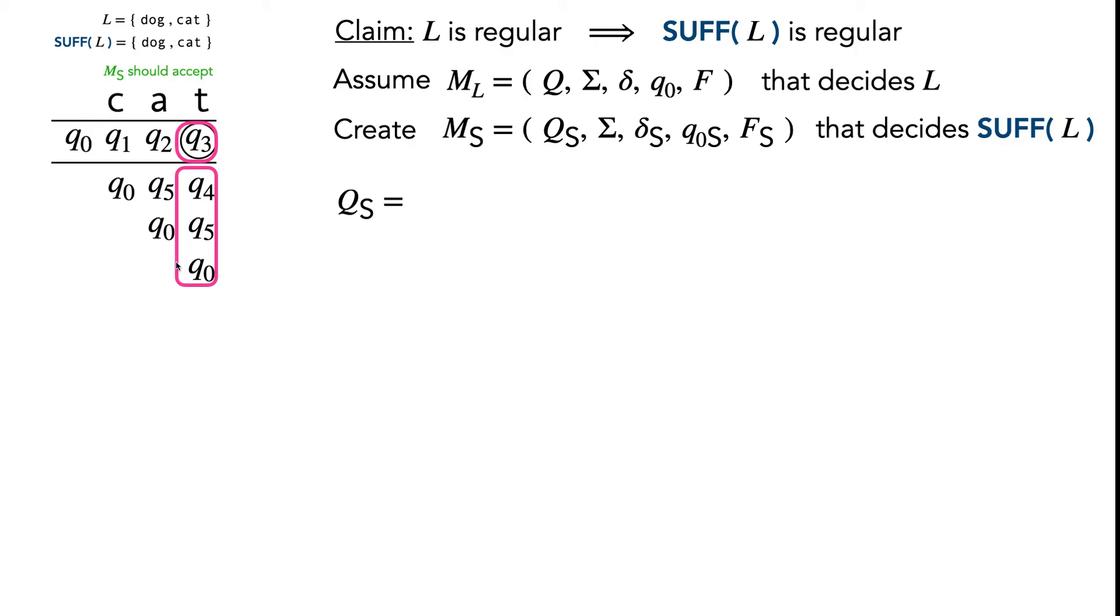In notation, that means Q_S is going to be the set of old states cross the set of sets of the old states. In other words, Q cross the power set of Q.